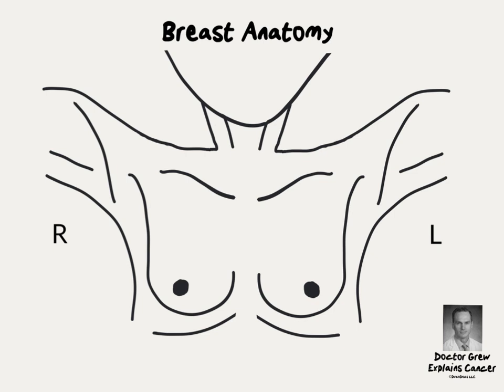Just beneath the breast are the muscles, bones, and nerves of the chest wall. The muscles are the pectoralis muscles, the nerves are in between the ribs, and the bones are of course the ribs themselves.